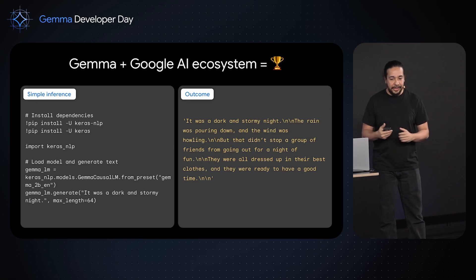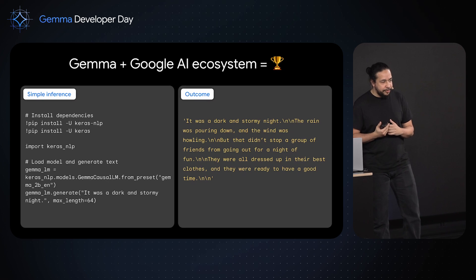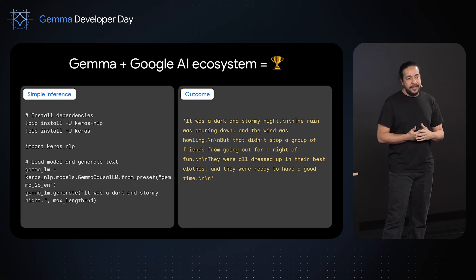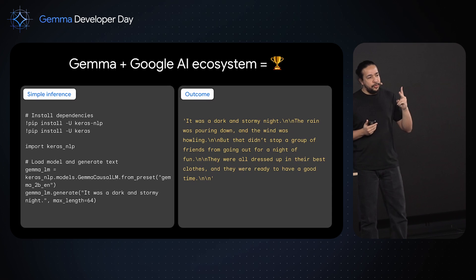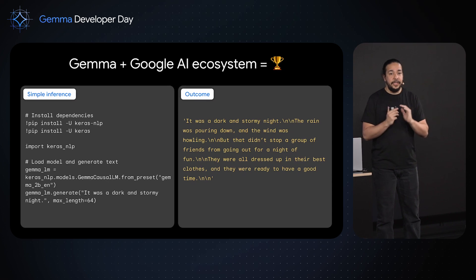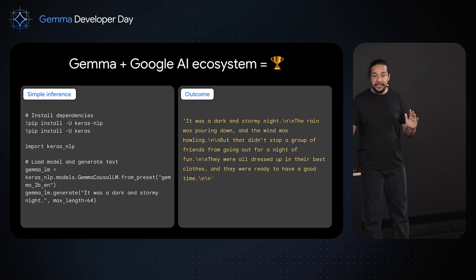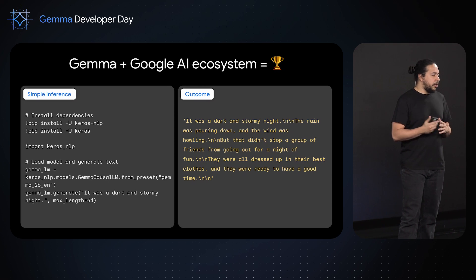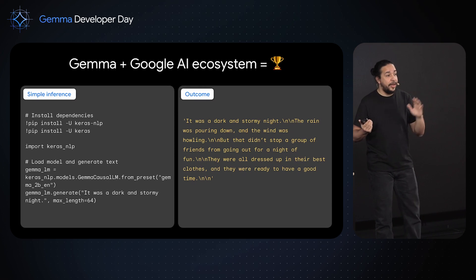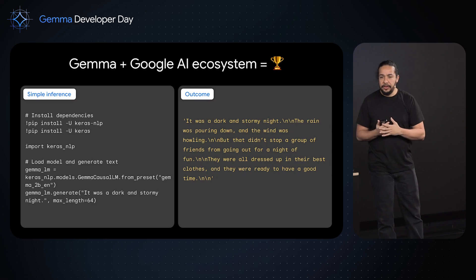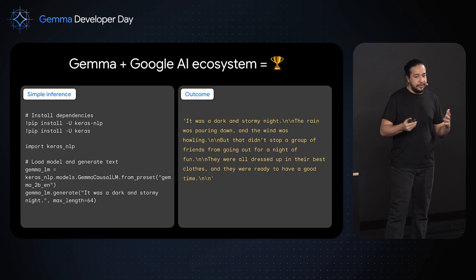Let's start with the basic code implementation. We have the Keras implementation — looking at the code, it's basically two lines. There's some imports and setup, but it's two lines of code: you load the model and you call the generate method. That's it. With that, you can start playing with the model in code right away. Of course, if you're not a Keras developer — if you're a PyTorch or Jax developer — we also have the same approach available for those frameworks specifically.